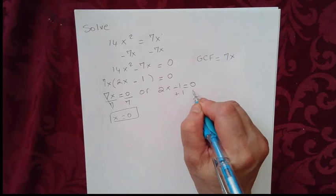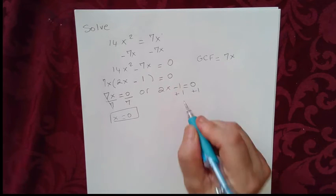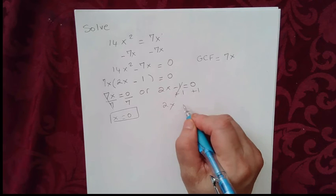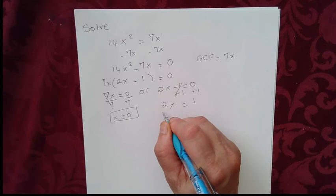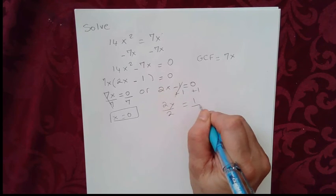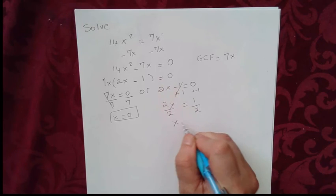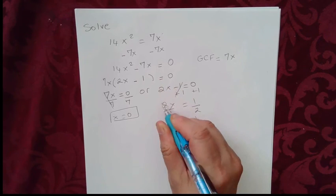And we add on both sides plus 1. And we get 2x equal to 1. So we divide by 2 on both sides of the equation. And we get x equal to 1 half.